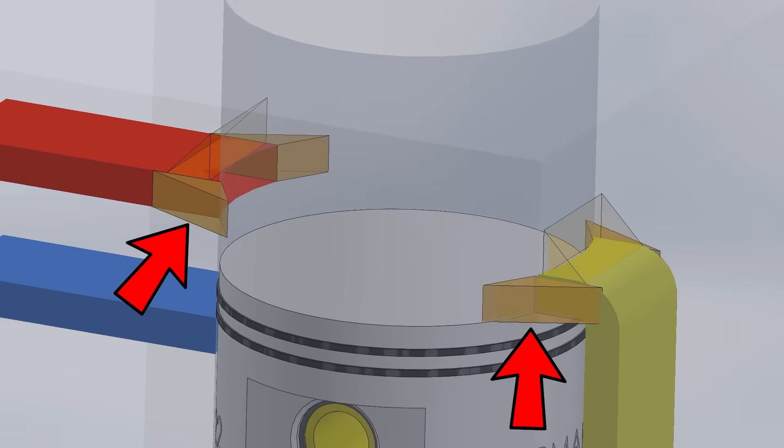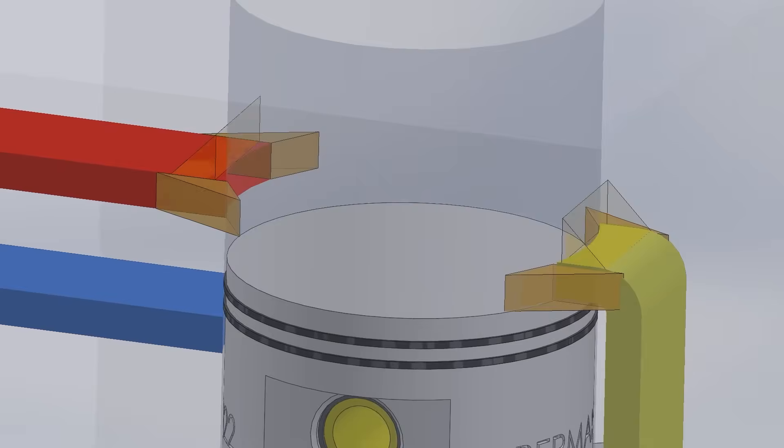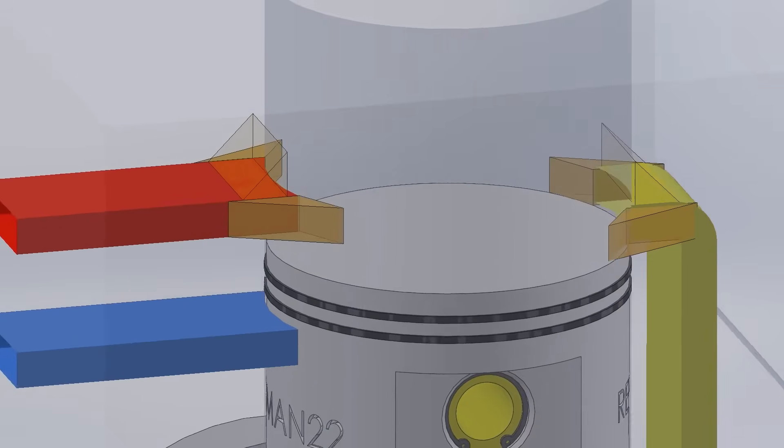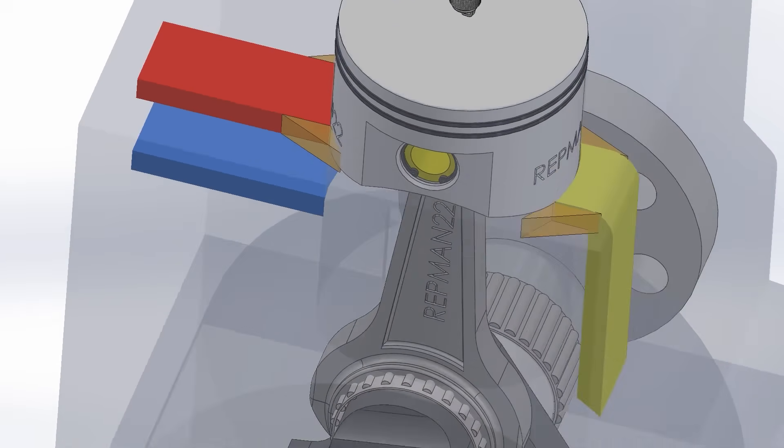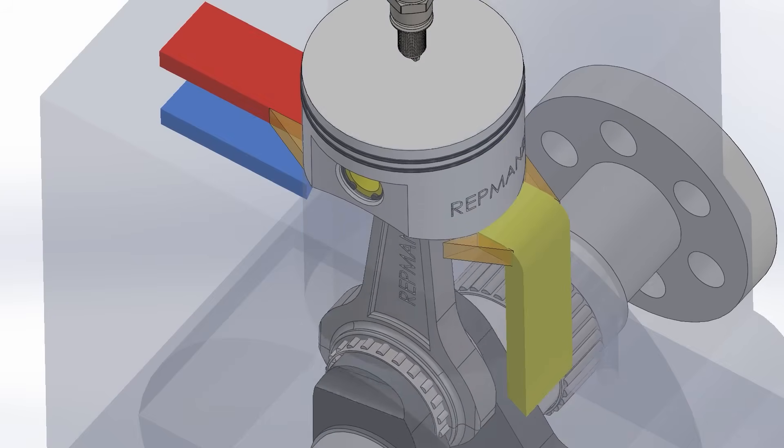Widening the ports improves power, but reduces the life of the rings. These tend to get hooked and bite the ports, since pressure is lost in this area, and they come out. This practice is only reserved for racing engines and short lifespans. One solution is to leave columns to keep the ring inside.